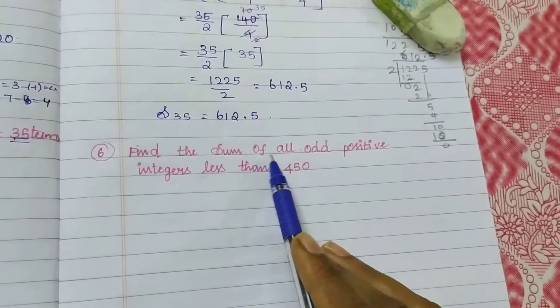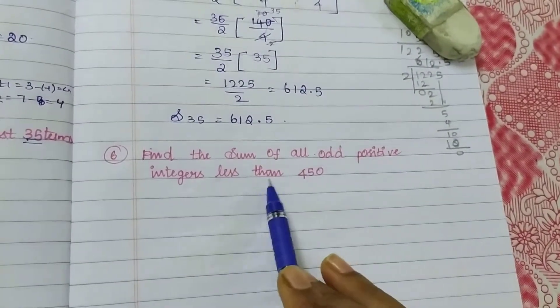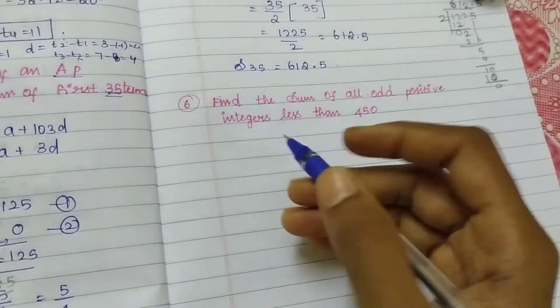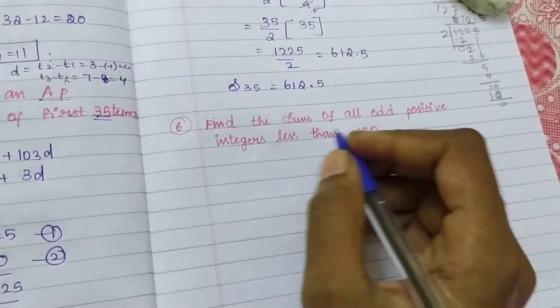Find the sum of all odd positive integers less than 450. Less than means the before value, so sum of all numbers.